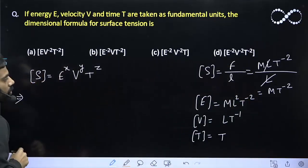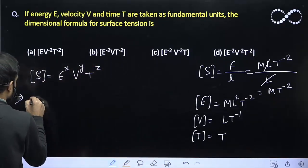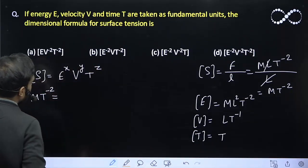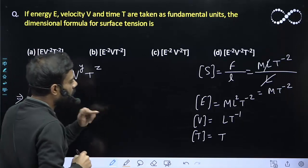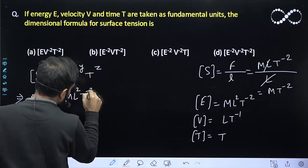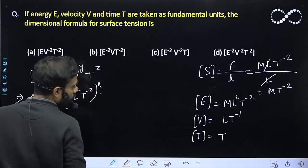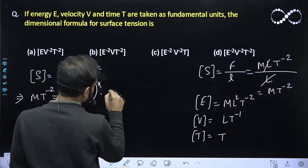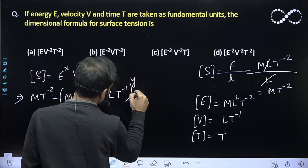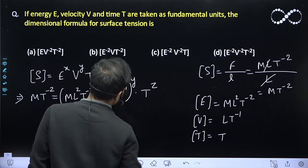Put in these values. The dimension of S, that is MT raised to power minus 2, is equal to: energy ML²T⁻² raised to power x, multiplied by velocity LT⁻¹ raised to power y, multiplied by T raised to power z.